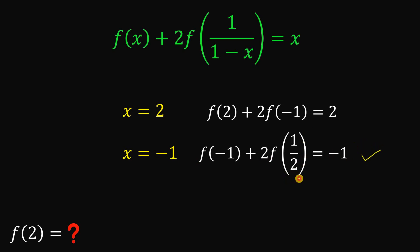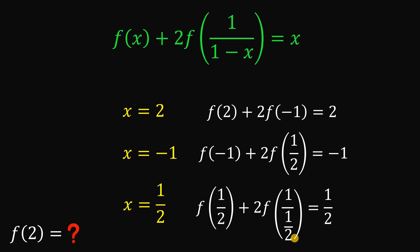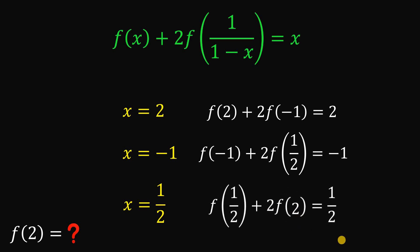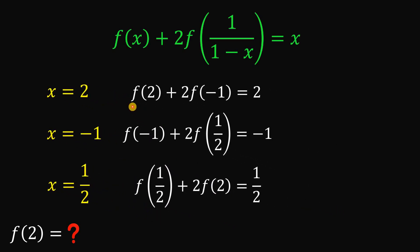Next, what if x is 1 over 2? If we replace all x with 1 over 2, we have f of 1 over 2 plus 2 times f of 1 over 1 minus 1 over 2 equals 1 over 2. Now, 1 minus 1 over 2 is 1 over 2, so 1 over that is just 2. Surprisingly, we go back to f of 2. So if x equals 1 over 2, we have f of 1 over 2 plus 2 times f of 2 equals 1 over 2. Using these three results, we can now find the value of f of 2.